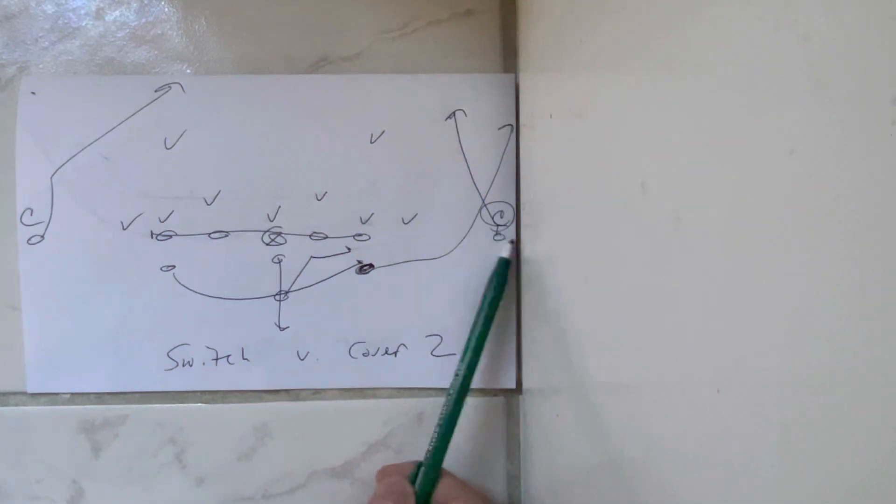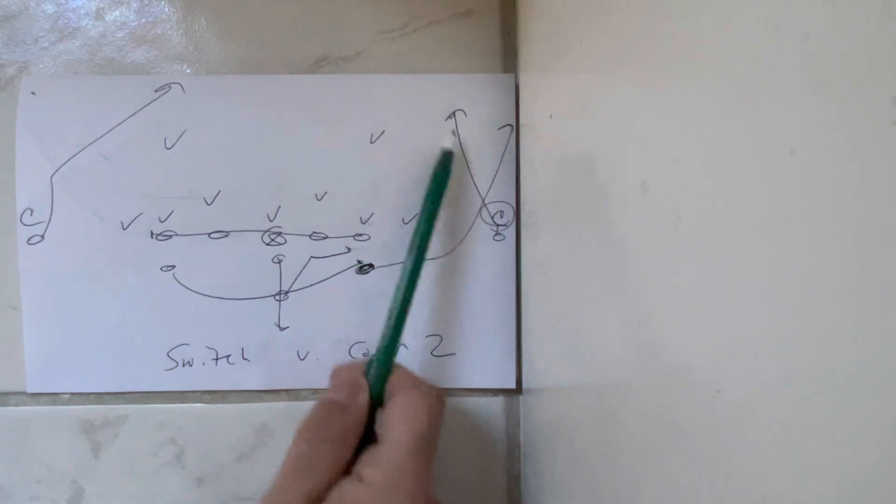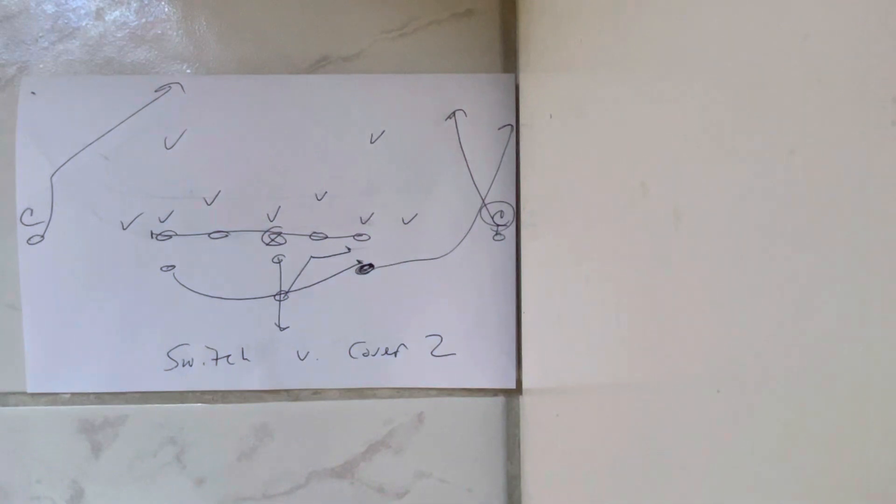Quarterback's at a five-step drop. The receiver's going to engage with the corner and then continue on at 15 degrees on the skinny post.